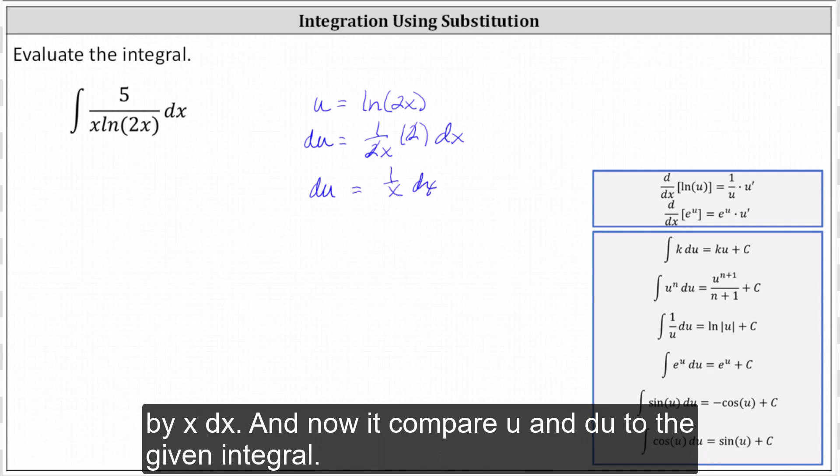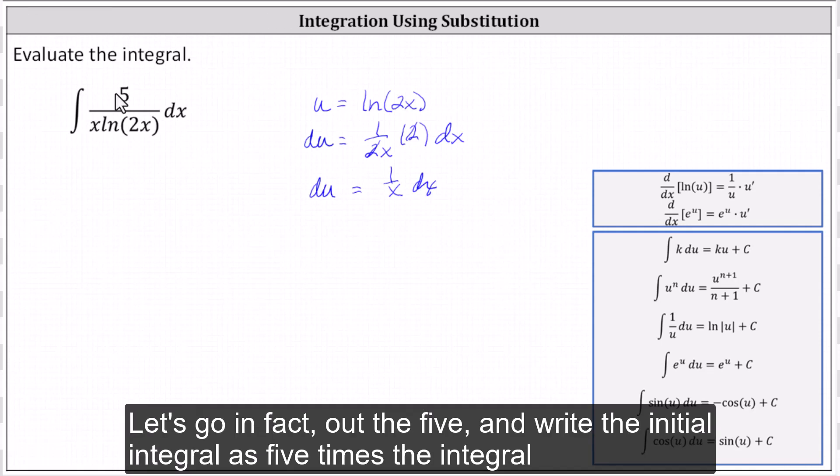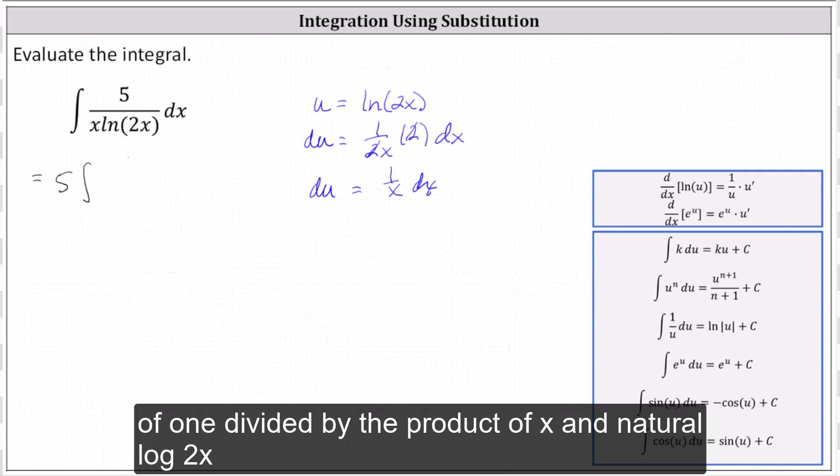And now we compare u and du to the given integral. Let's go ahead and factor out the five, and write the original integral as five times the integral of one divided by the product of x and natural log 2x dx.